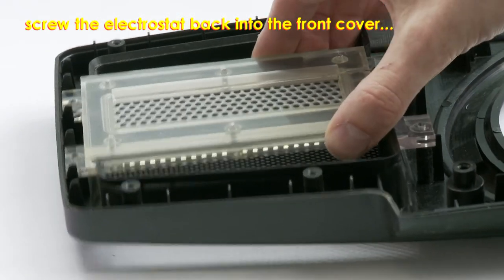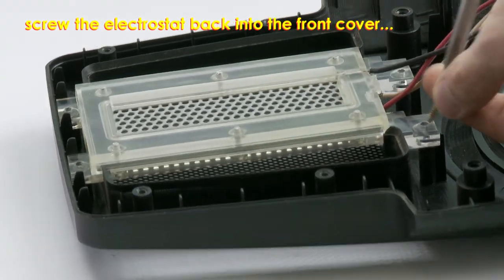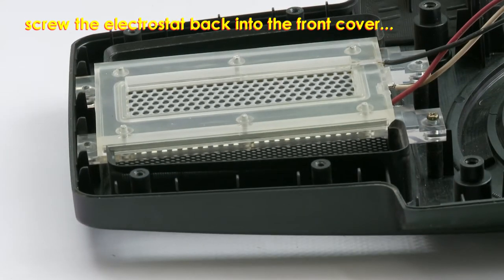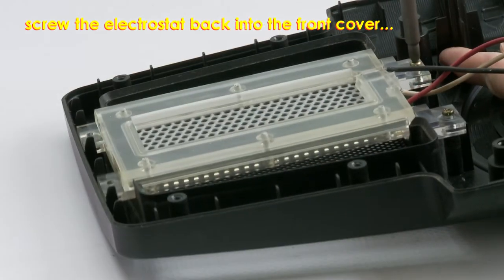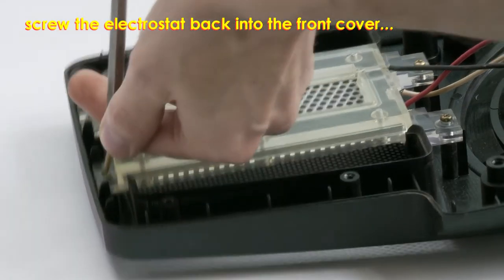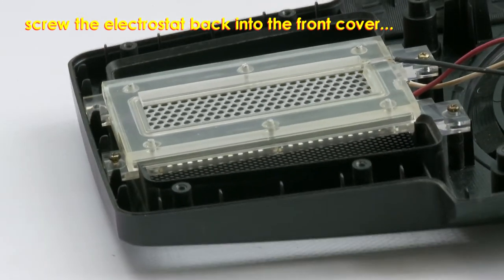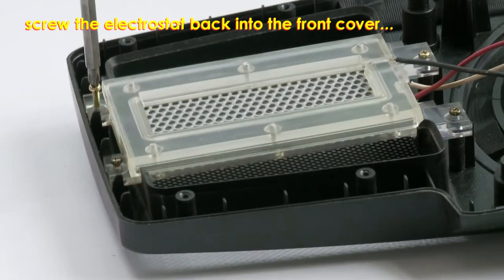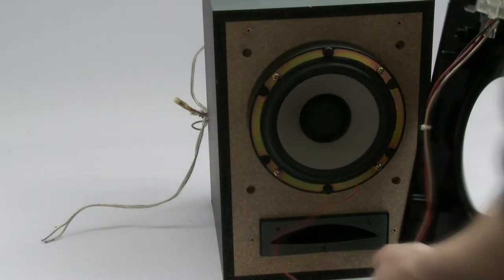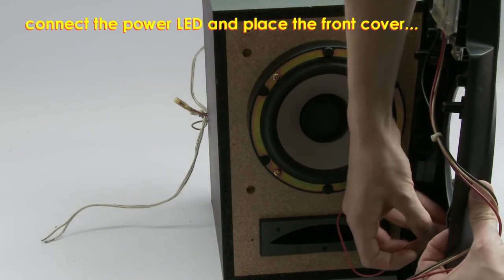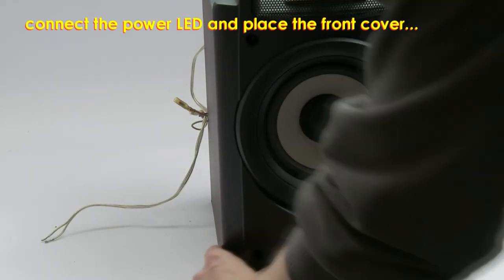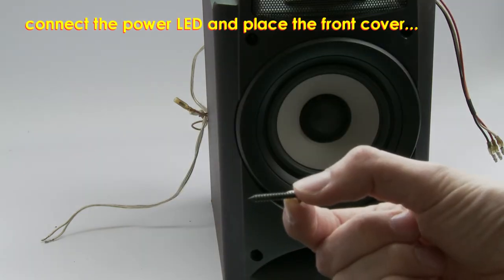Mount the electrostat to the front cover. Mount the front cover to the front of the loudspeaker but first connect the power LED.